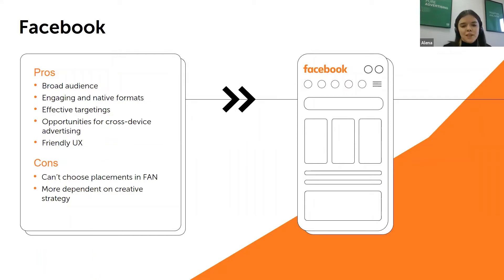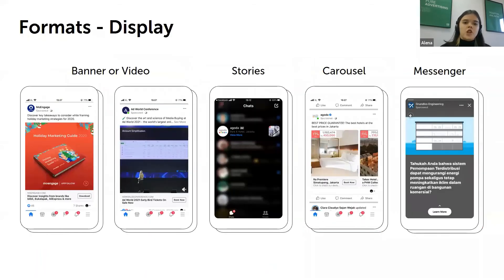Facebook's cons: with Facebook Audience Network you cannot choose specific placement websites or apps where your ads are shown, and you can't optimize toward their individual effectiveness, which may lead to negative results. Also, in Facebook, creative is king — if you don't have a strong design team or agency to support you, you may face optimization difficulties. Facebook is always testing new formats; the most common ones include images, videos, carousels, collection ads, and instant experiences — each with its own purpose, so choose ones relevant to your audience and product.